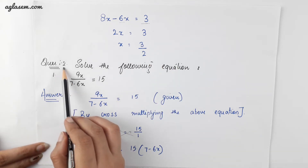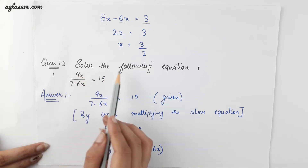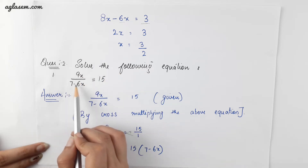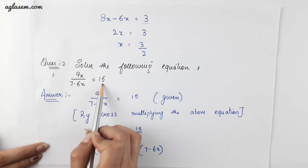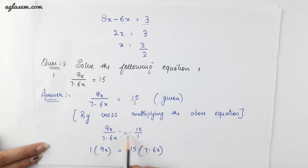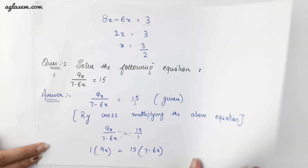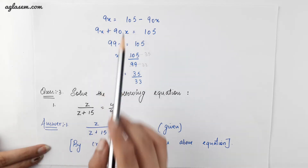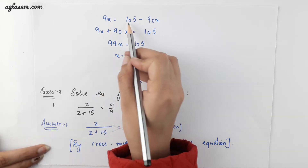Coming to the second question: solve the following equation. 9x divided by (7 minus 6x) is equal to 15. Similarly, applying the same method we can write 15 as 15 by 1. Now doing the cross multiplication: 9x into 1 is 9x, and 15 into (7 minus 6x).